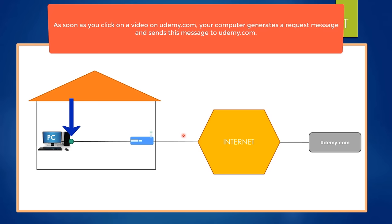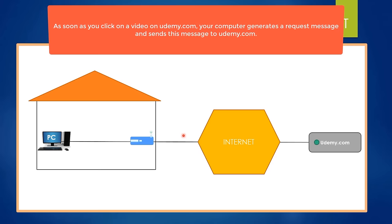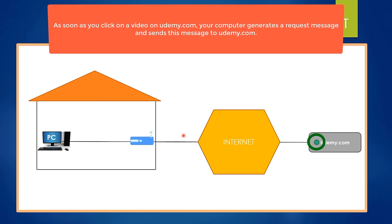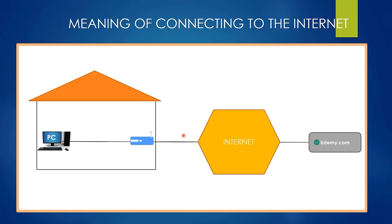The packet is first sent to the home router, and then the home router sends the packet to udemy.com over the internet. We can think of this green packet as your request message to udemy.com. A request message gives information to udemy.com that you want to watch the related video. After udemy.com receives your request message, it realizes you want to watch a video — hence, Udemy sends the related video to you over the internet. These red packets represent the pieces of the video that Udemy sent to you.